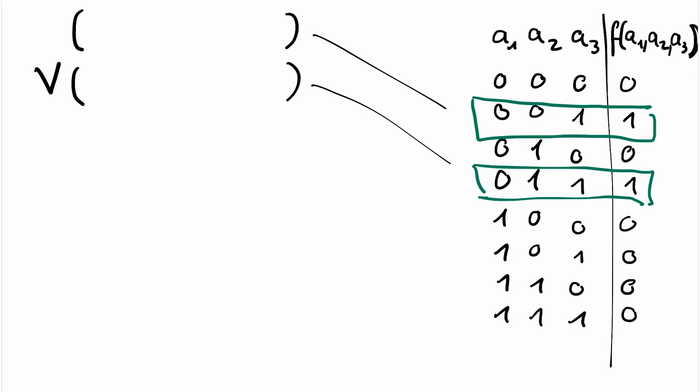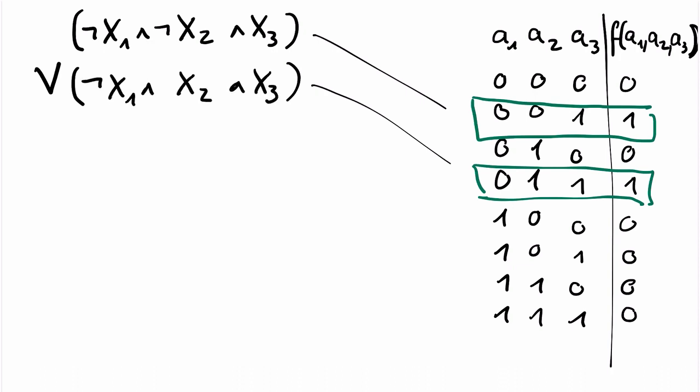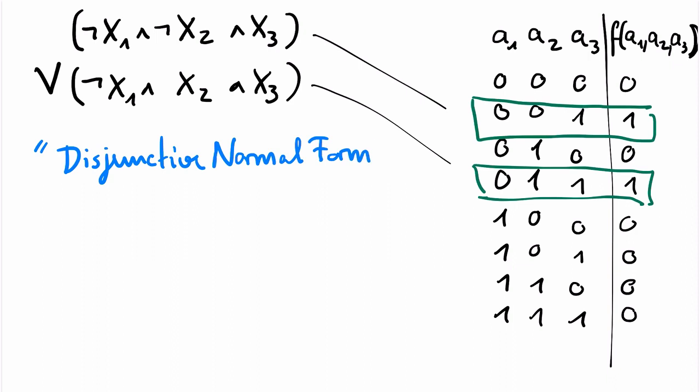The idea is that the first disjunct describes the second line and the second disjunct describes the fourth line. We are in the second line if the first argument is 0, the second is 0, and the third is 1 — so we negate X1 and X2 and put X3 positively without negation. The formula NOT X1 AND NOT X2 AND X3 evaluates to 1 if and only if the arguments are as in the second line. Similarly for the fourth line, the second disjunct comes out as NOT X1 AND X2 AND X3. This procedure works analogously for every Boolean operation. Note that the resulting formula has a very particular form: it is a big disjunction of conjunctions of variables or negated variables. This form is called disjunctive normal form, short DNF.